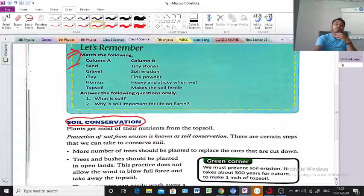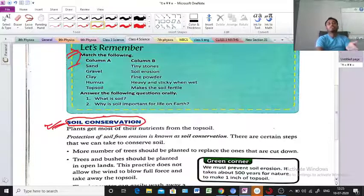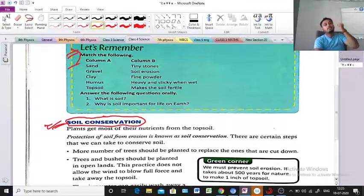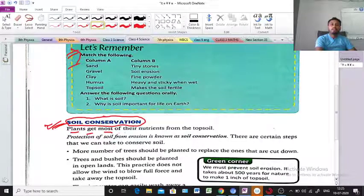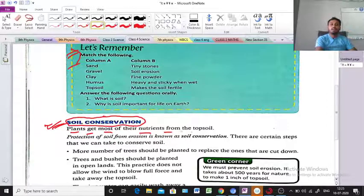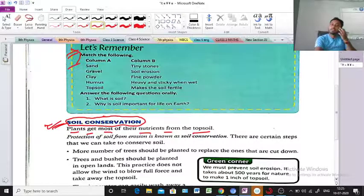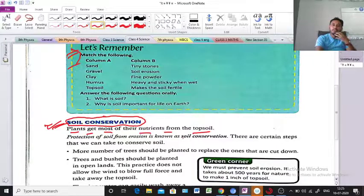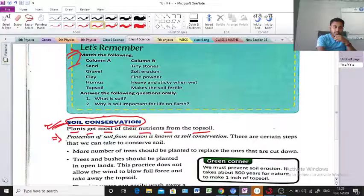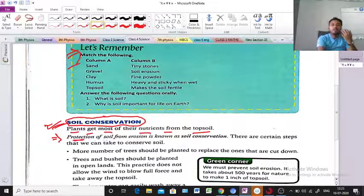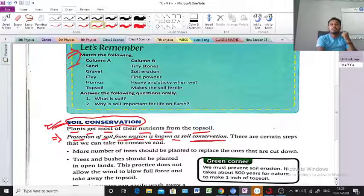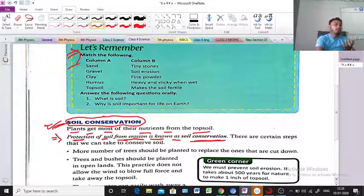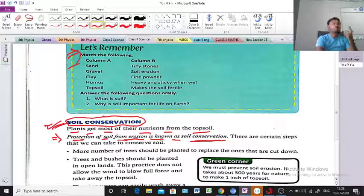Now the next part, what is the next part? Soil conservation. Plants get most of their nutrients from the topsoil. What is soil conservation? Protection of soil from erosion is known as soil conservation.